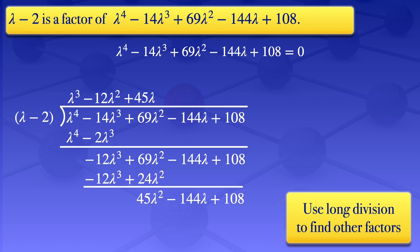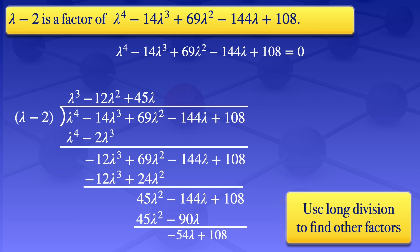The leading term is 45λ². Dividing by λ gives 45λ, written as +45λ on top. Multiplying 45λ by (λ - 2) gives 45λ² - 90λ. Subtracting: 45λ² - 45λ² = 0, and -144λ - (-90λ) = -54λ. Dividing -54λ by λ gives -54. Multiplying -54 by (λ - 2) gives -54λ + 108, and subtracting gives 0. The other factor is λ³ - 12λ² + 45λ - 54.